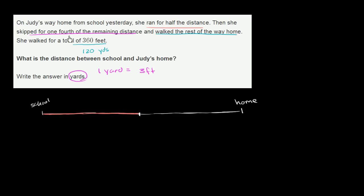Then they say she skipped for 1/4 of the remaining distance. The remaining distance is what hasn't been filled in yet. Let's mark that off into fourths: 1/4, 2/4, 3/4. She skipped for 1/4 of the remaining distance after running. Then she walked the rest of the way home — this is the distance that she walked, and this distance is 120 yards.